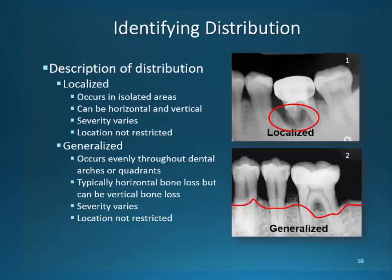Periodontal disease is classified by distribution, also referred to as location. Areas that are isolated are referred to as localized areas of disease. These isolated areas can have both horizontal and vertical bone loss. Severity can vary as well as their description — whether it is patterning or distribution will determine the severity. Image one identifies only one tooth having bone loss. Generalization occurs when the periodontal condition is evident throughout the arch or quadrant. If the condition is generalized throughout the entire dentition, the condition will have a presence of 30% or more across the dentition. Both horizontal and vertical bone loss can be present, and severity is not defined by location or distribution. Image two shows bone loss throughout the entire quadrant.